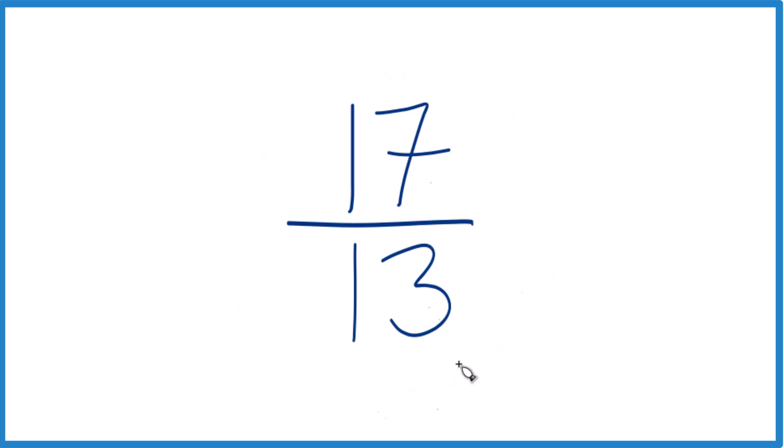So when we simplify a fraction like this, we need to find a whole number that goes evenly into 17 and 13, except the only whole number that's going to go into both 17 and 13 is 1.